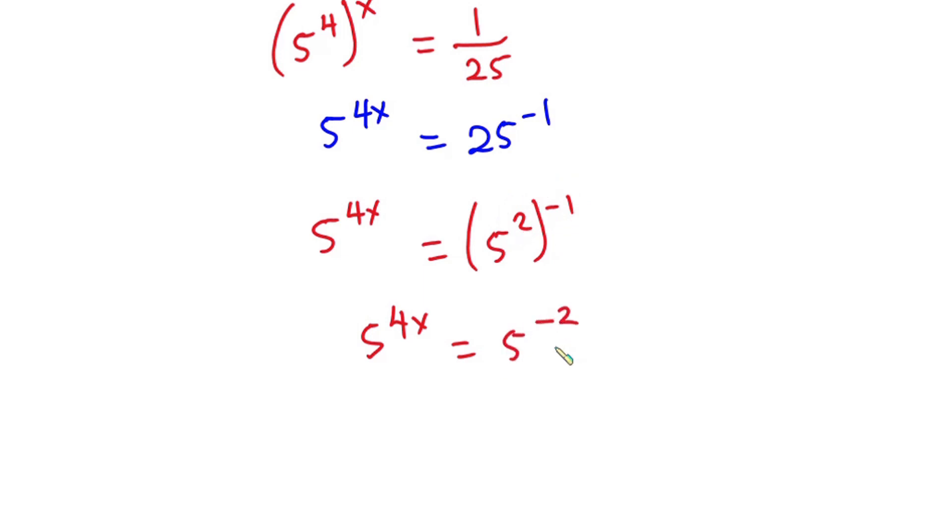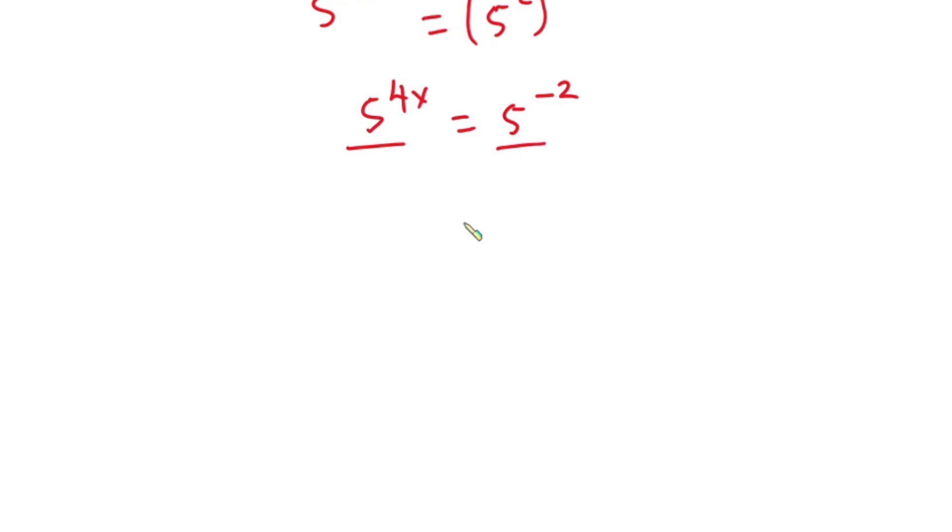Now you can see the bases are the same, so we can equate the exponents. Now we have 4x is equal to negative 2.